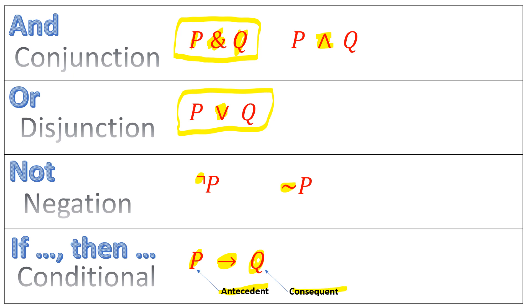And as we will find out in future videos, in future sections, for a conditional, P is sufficient for Q. Q is necessary for P. But right now, we can just use our common sense to get a grasp of what these sentential connectives are doing.